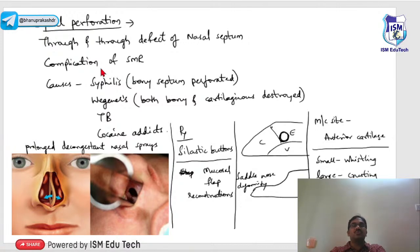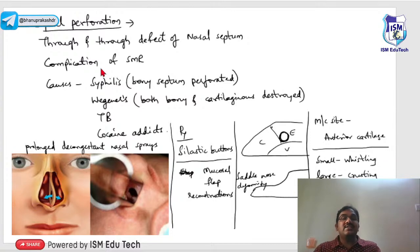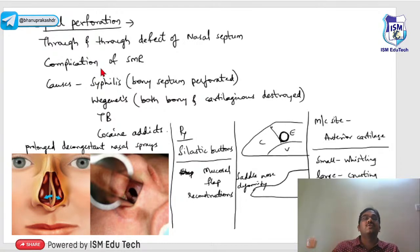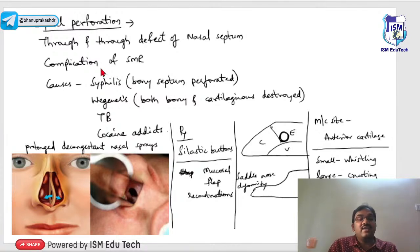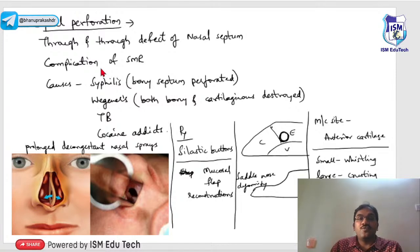Prolonged use of nasal decongestants like Otrivin can also cause septal perforations and rhinitis medicamentosa — a condition where all structures look normal but the patient cannot sense airflow, complaining of constant nasal block. There is no proper treatment for rhinitis medicamentosa, so avoid repeated use of Otrivin nasal drops for persistent nose block.